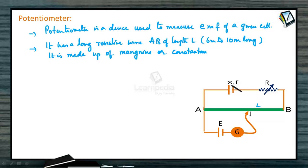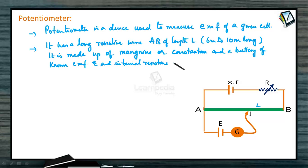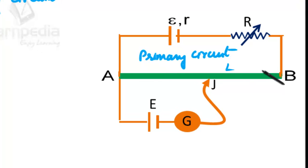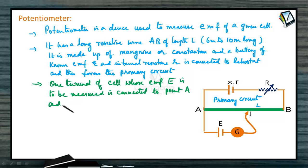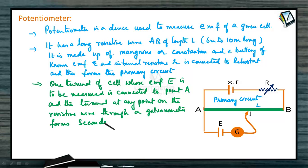A battery of known voltage E and internal resistance R, called the supply battery, is connected with a rheostat. This forms the primary circuit. The battery whose EMF has to be calculated is connected in the secondary circuit. One terminal of the cell whose EMF capital E is to be measured is connected to point A, and the other terminal connects through a galvanometer and jockey to any point on the resistive wire.